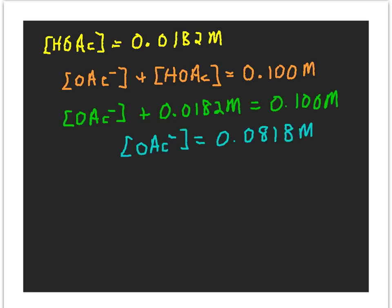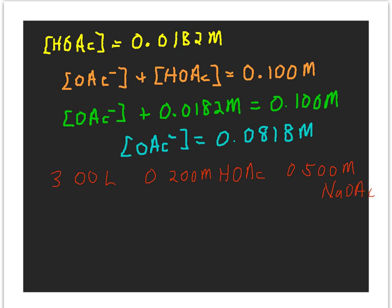So we know the concentration of our two components. The acetic acid concentration is 0.0182 molar, and we can substitute back: the concentration of acetate ion plus 0.0182 molar equals 0.100 molar, so the concentration of acetate ion is equal to 0.0818 molar. That acetate ion will come from sodium acetate. The other question was how do we make this solution. From the problem, we need to make three liters of the solution using 0.200 molar acetic acid and 0.500 molar sodium acetate as our starting stock solutions.